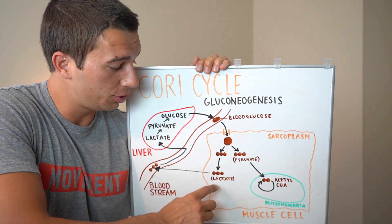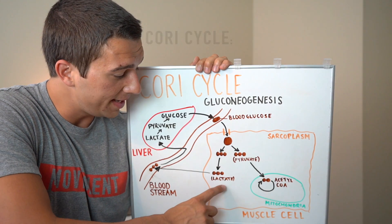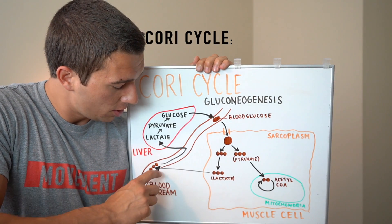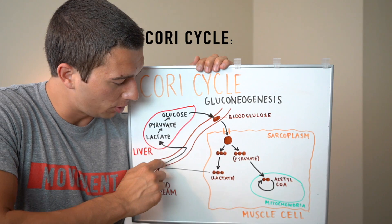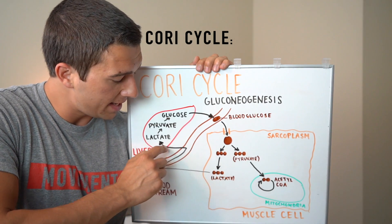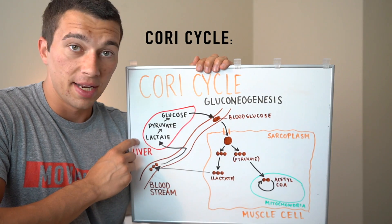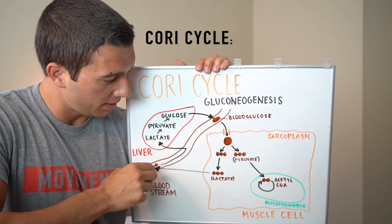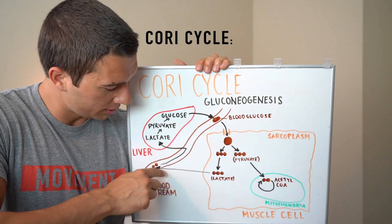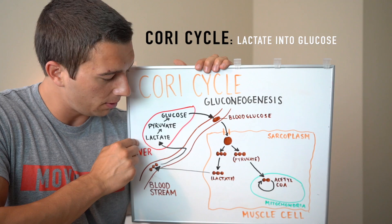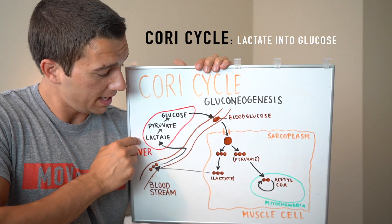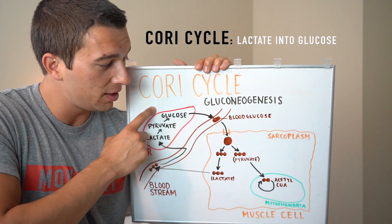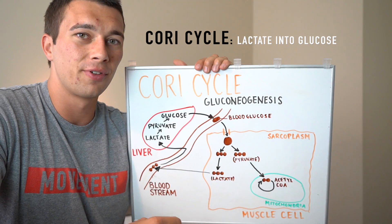Here's where we really introduce the Cori cycle: when we take that lactate, we leave the muscle cell, go into the bloodstream, transport through the bloodstream, and then over to the liver. This is one way that gluconeogenesis can occur — going from lactate, out of the muscle cell, through the bloodstream, to the liver, turning that lactate back into pyruvate, and then turning that pyruvate back into glucose that can then be used for energy.